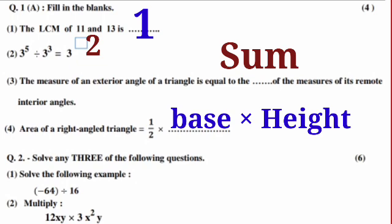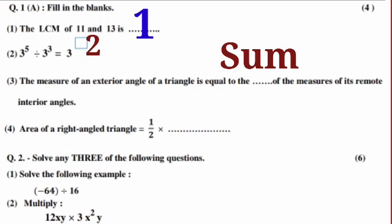Please like and share the video. Second: 3 raised to 5 divided by 3 raised to 3 is equal to 3 raised to 2. We use the rule: a raised to m divided by a raised to n equals a raised to m minus n. Third, the answer is base into height. Fourth, the area of a right-angle triangle is equal to 1 upon 2 times base into height. Third question: the measure of an exterior angle of a triangle is equal to the sum of the measures of the remote interior angles.